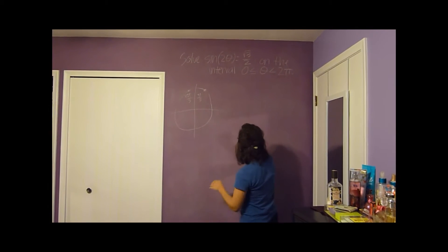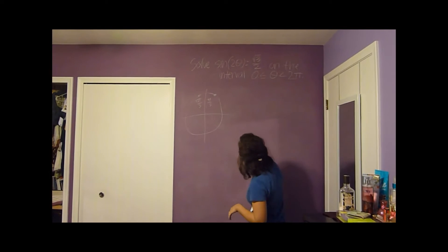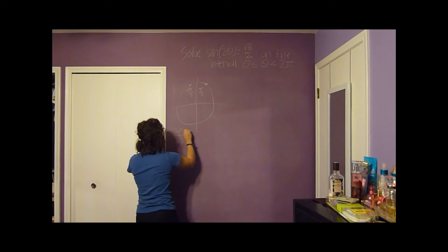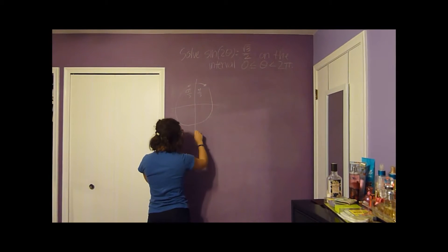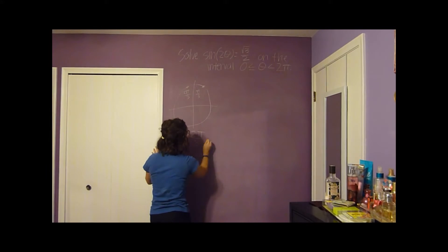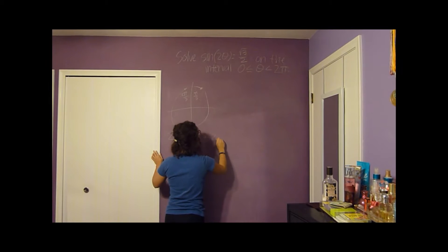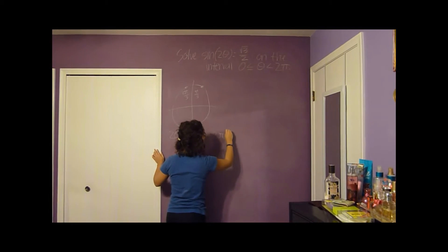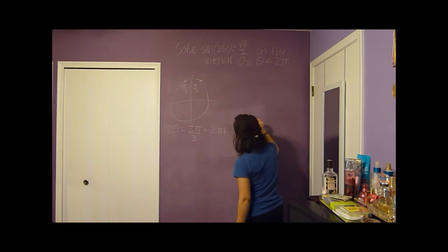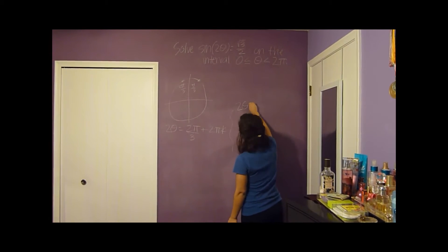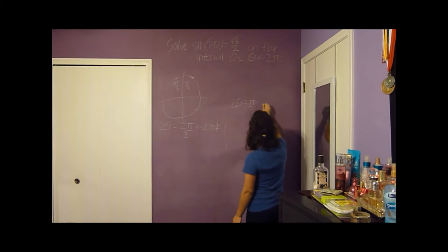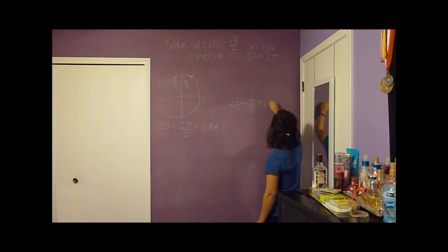So what we're going to do is set up two equations. We're going to have 2 theta equals 2 pi over 3 plus 2 pi times any integer k, and then 2 theta equals pi over 3 plus 2 pi k.